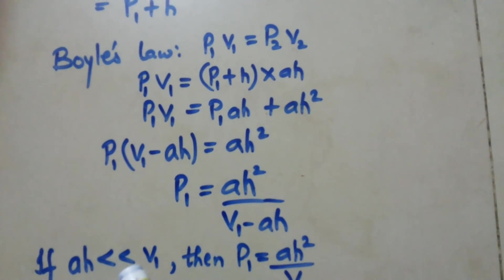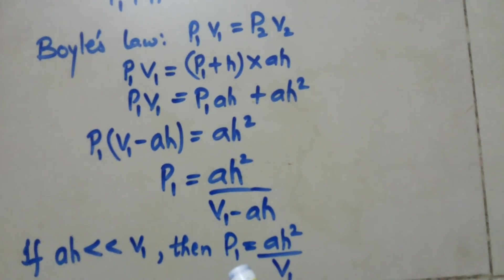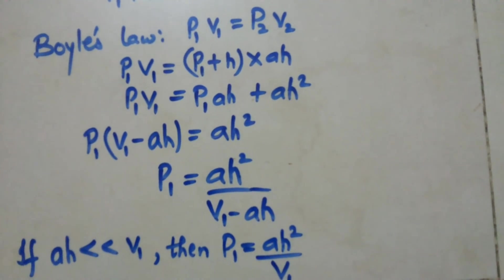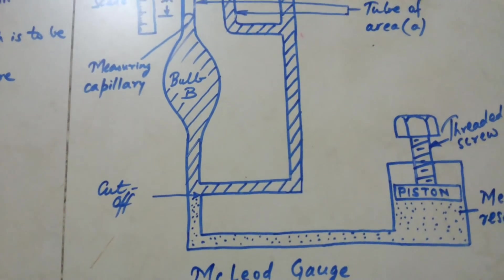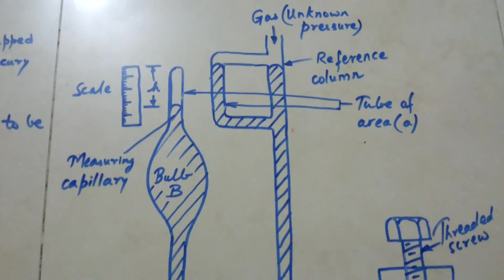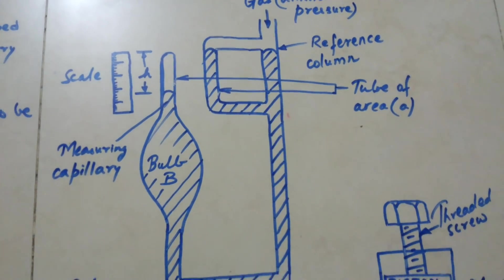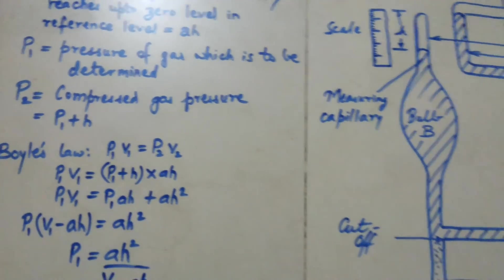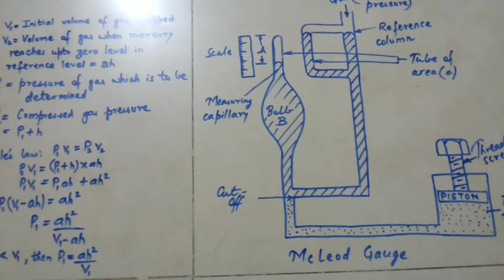If A H is very much less than V1, then we can say that P1 is equal to A H squared divided by V1. This is the McLeod gauge, which is used to measure very low pressures for gases. Hope you liked the video. We will meet again in the next video very soon. Till then, goodbye.